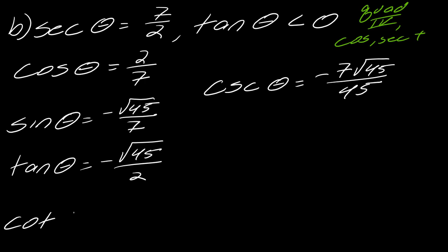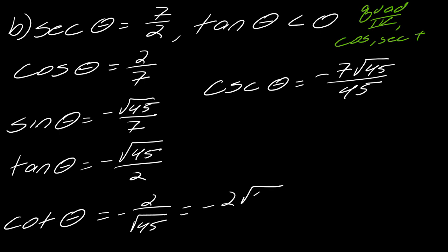For cotangent of theta, I just take the reciprocal of tangent, giving negative 2 over the square root of 45. Rationalizing gives negative 2 square root of 45 over 45.